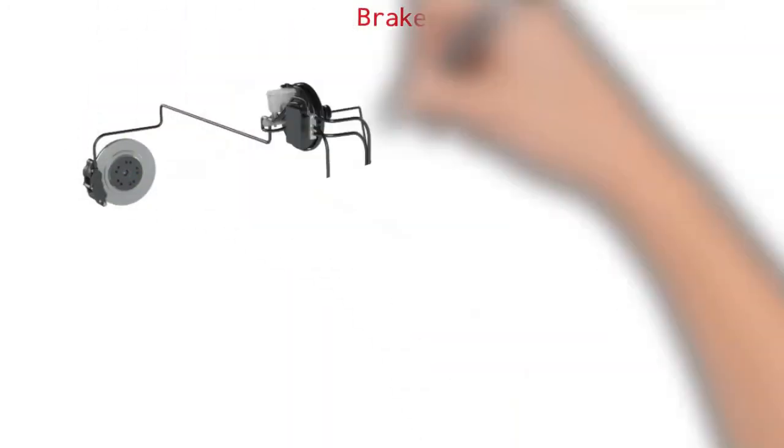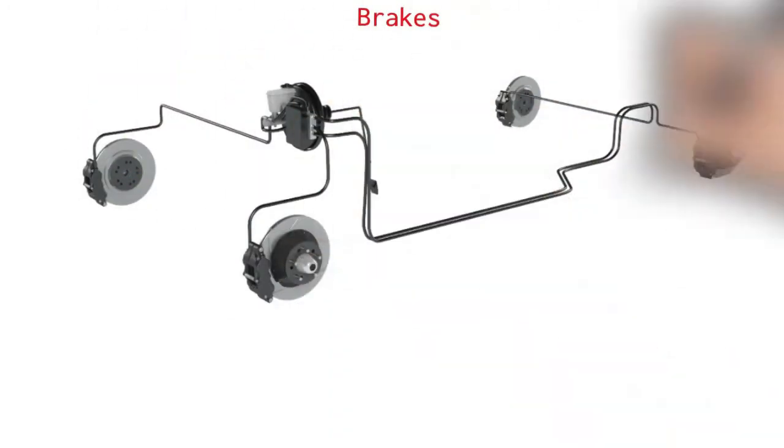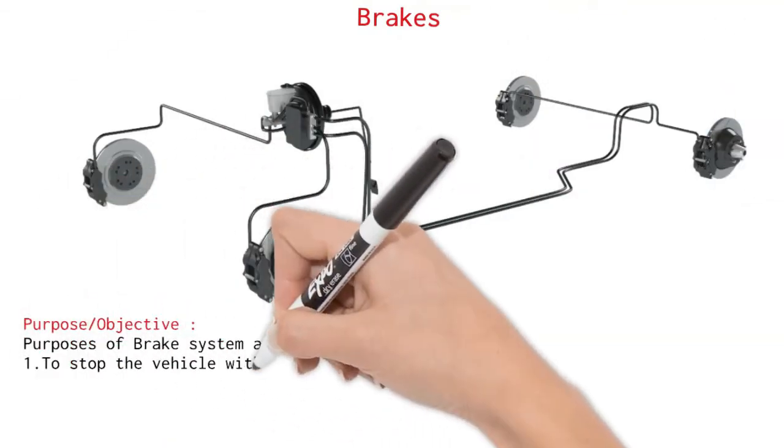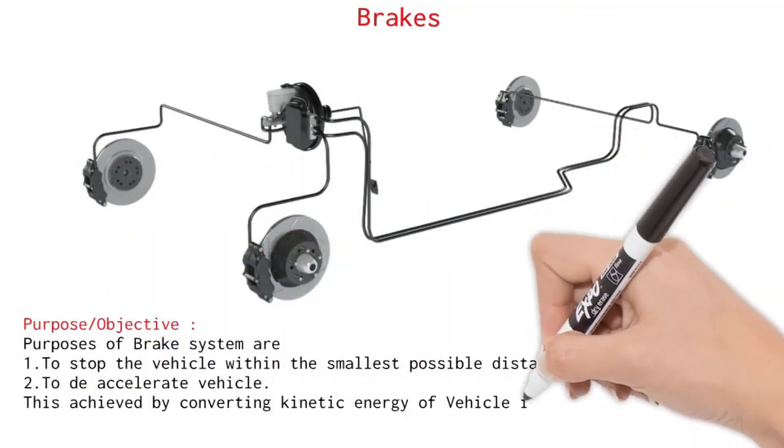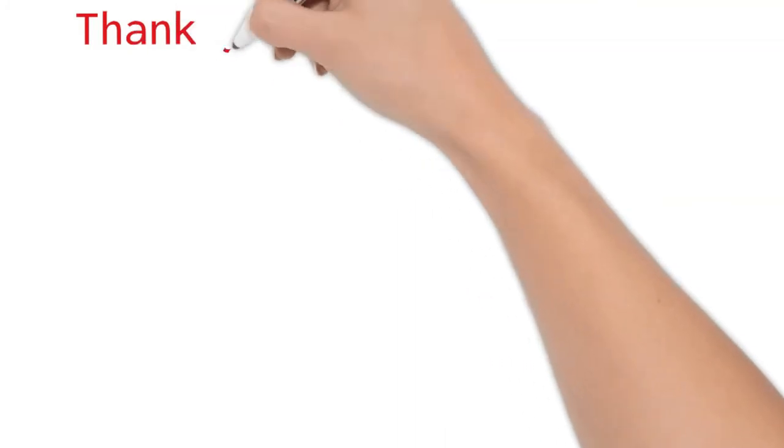Brakes. Purposes of brake systems are: To stop the vehicle within the smallest possible distance. To de-accelerate the vehicle. This is achieved by converting kinetic energy of vehicle into heat energy.